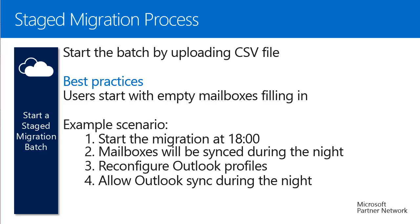The recommended best practice scenario: move one group of users each night. Start the migration batch after work hours, around 6 PM, so mailbox data can synchronize overnight. In the evening, reconfigure the affected users' Outlook profiles so Outlook can rebuild the OST file and download mailbox data. In the morning, users start with a pre-filled Outlook profile and can begin working. The next day, start the next batch — moving users throughout the week as time and capacity allow.